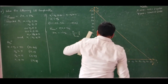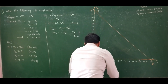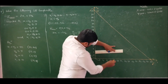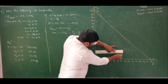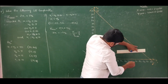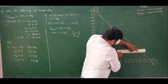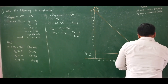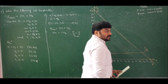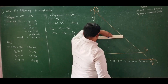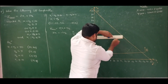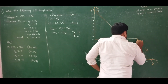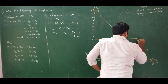The second constraint: x2 = 3. Draw a horizontal line at x2 = 3. Since it is greater than or equal to, this should move upward. This is our second constraint. The third constraint: x2 = 12. Draw a line at x2 = 12. Since it is less than or equal to, this should move downward. This is our third constraint.